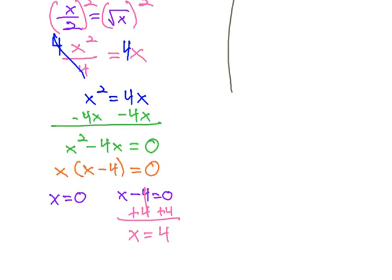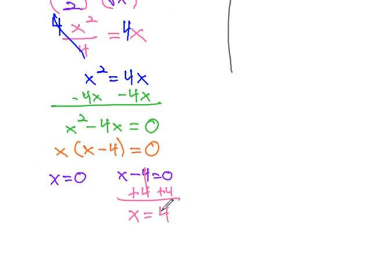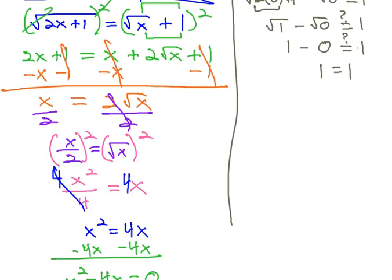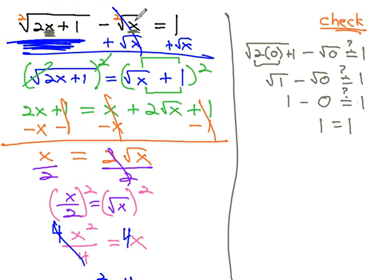The other answer we have, scrolling back to the bottom, was 4. So, let's plug 4 in for both of our x's. The square root of 2 times 4 plus 1 minus the square root of 4. Well, 2 times 4 is 8 plus 1 minus the square root of 4.